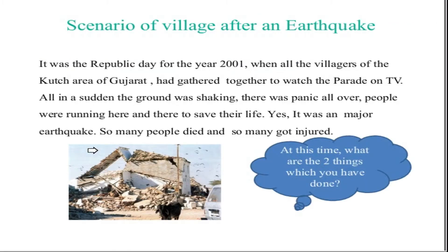Here we have a picture of an earthquake-affected area. It was the year 2001, Republic Day, 26th January, when all the villages of the Kutch area of Gujarat had gathered to watch the parade on TV. All of a sudden the ground was shaking, there was panic all over, and people were running here and there to save their lives.